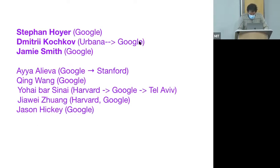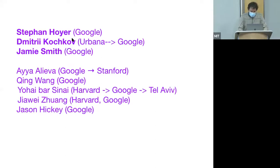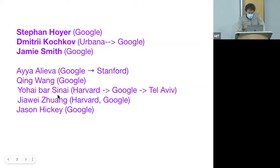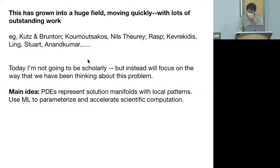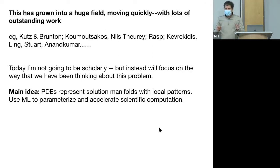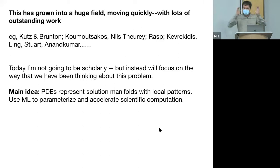The work I'm going to tell you about has been done by a large group, mainly at Google. The most recent and most interesting part was really done by Stefan Hoyer, Dmitri Kochkov, and Jamie Smith. The original idea was done by a former postdoc at Harvard, Yohai Bar-Sinai, who is now a professor in Tel Aviv. I'm going to make no effort to be scholarly—there's a ton of interesting work in this field, but I just want to explain the way we've been thinking about this.